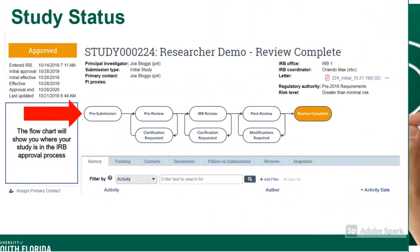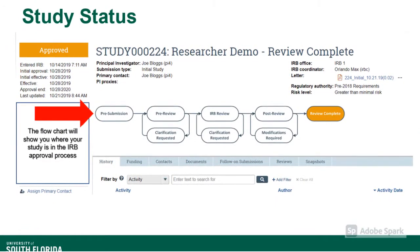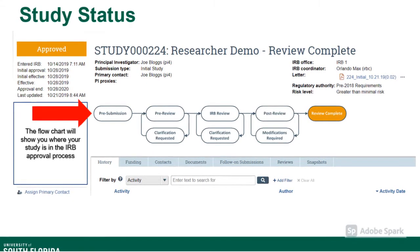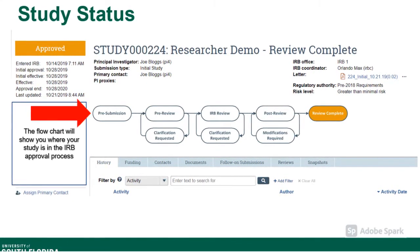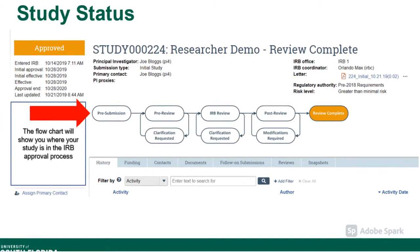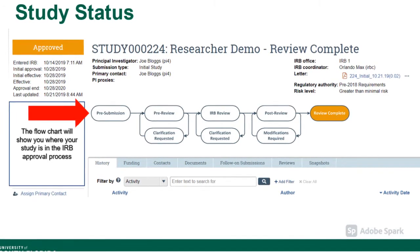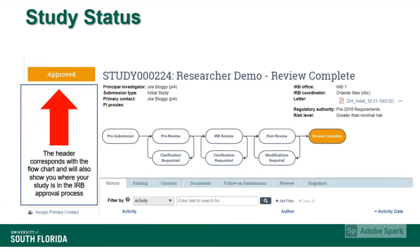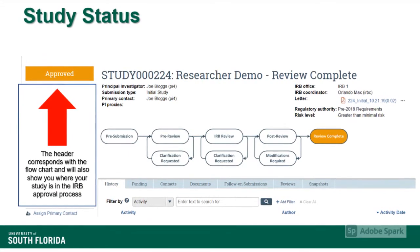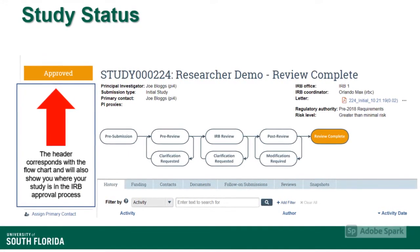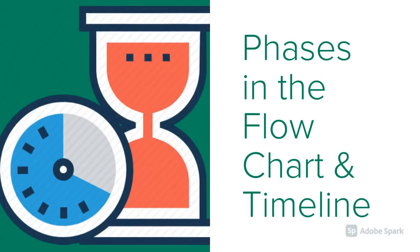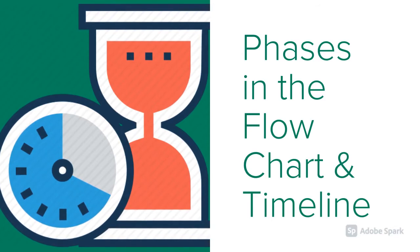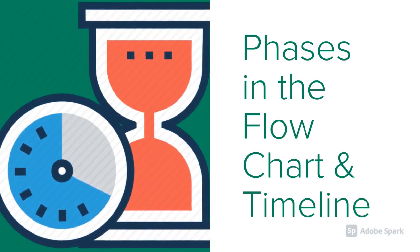So let's get started. Once you submit your application in the Bulls IRB system, the main study webpage is called the study workspace. Here you will find a flowchart that indicates the stages that your application is in during the review process. The flowchart also corresponds with the orange block header that is located in the upper left-hand side of the study workspace. We're going to talk about each of the phases in the flowchart, what it means for your study, and the timeline for a typical Bulls IRB application submission.